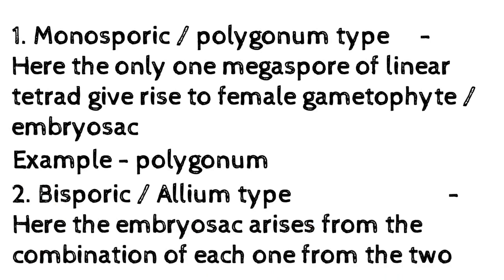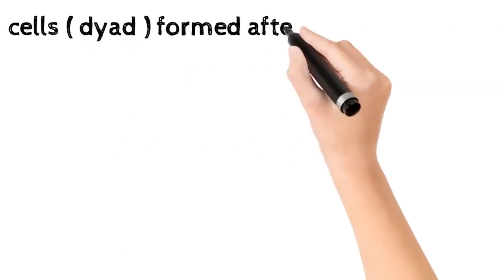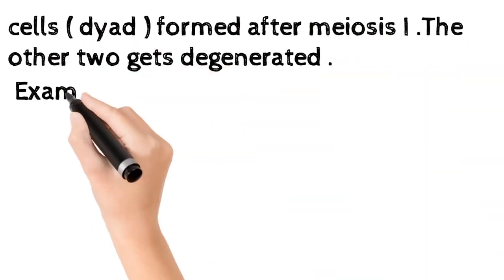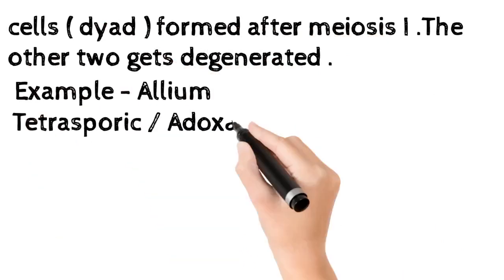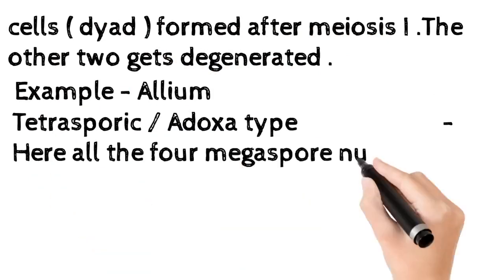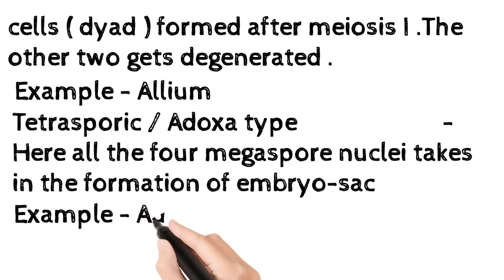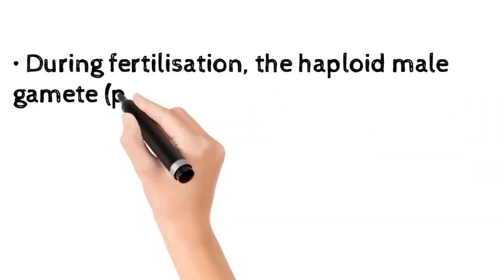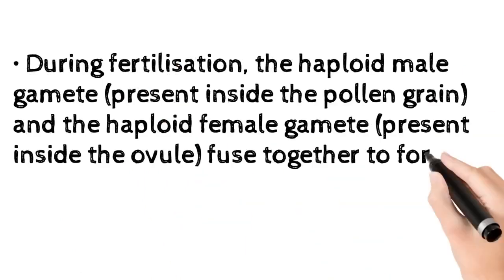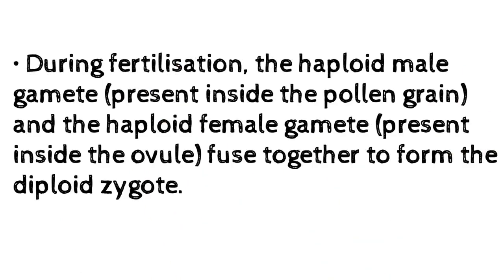In the Allium type, the other two cells degenerate. Example: Allium. Type 3 — Tetrasporic or Adoxa type: here all four megaspore nuclei participate in the formation of the embryo sac. Example: Adoxa. During fertilization, the haploid male gamete present inside the pollen grain and the haploid female gamete present inside the ovule fuse together to form the diploid zygote.